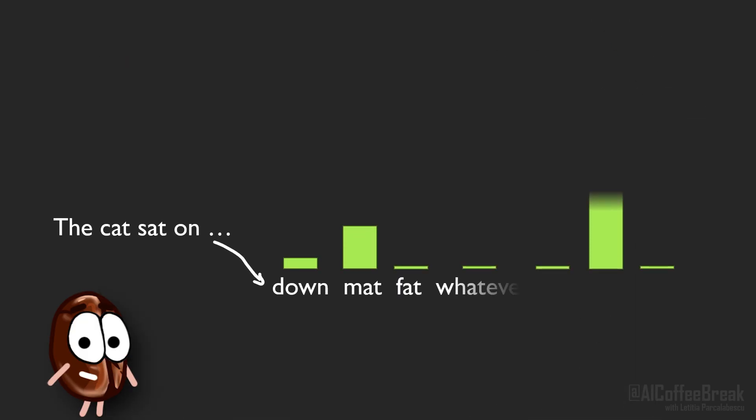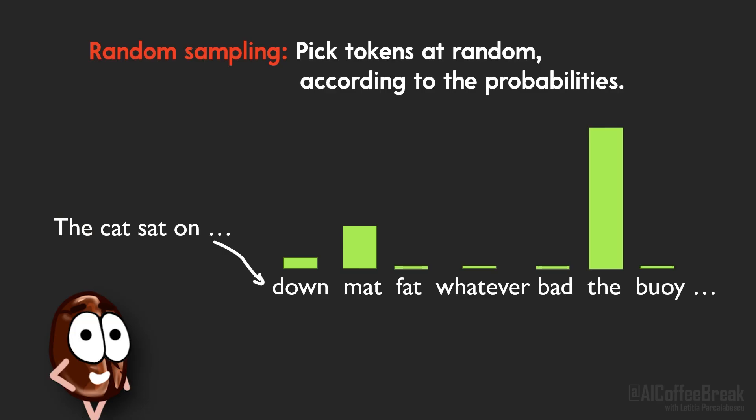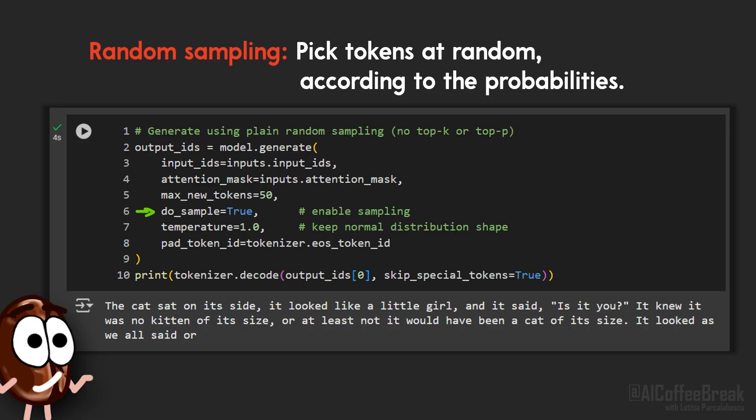Let's start with the most basic approach other than greedy decoding, namely plain random sampling. Once the model has assigned probabilities to all possible tokens, random sampling just picks one token at random according to those probabilities. So if 'the' has 60% chance, 'mat' 30%, then 'down' 5%, then 'the' will be chosen only 60% of the time, and there's a lot of chance left that the model surprises you with, for example, 5% of the time saying 'down'. This method adds a lot of creativity being so unpredictable, and for short generations that can actually be a good thing.